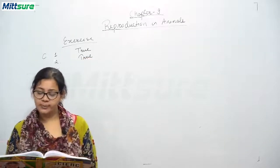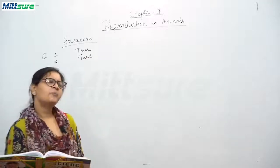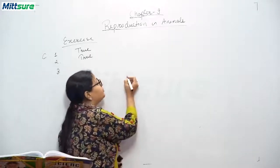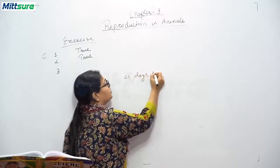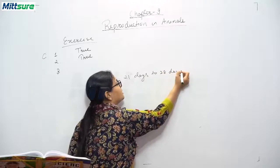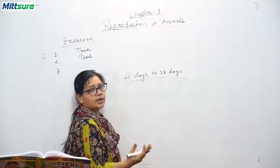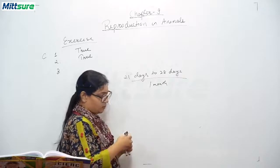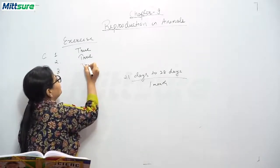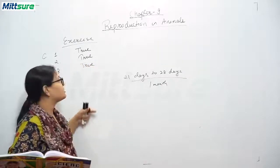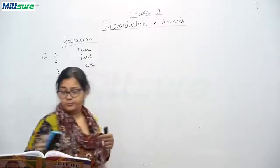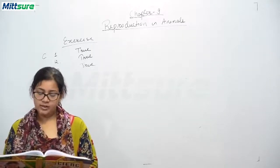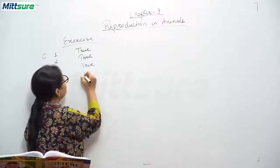Third: in human females, one ovum is released every month. The cycle of production of an ovum is approximately 21 to 28 days, and since a month is generally 30 days, we say one ovum is produced per month in a human female. So it is also true. Fourth: a zygote is formed as a result of fertilization. It is also true.